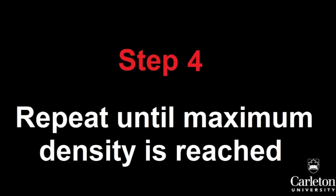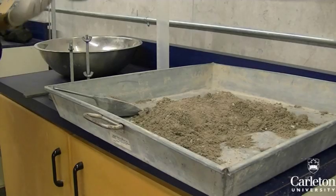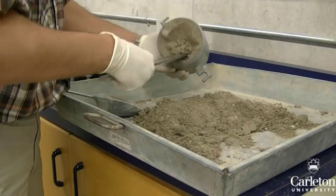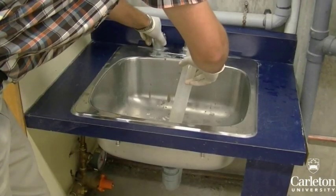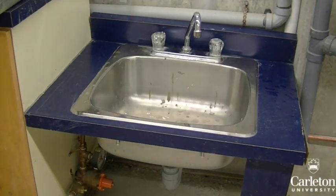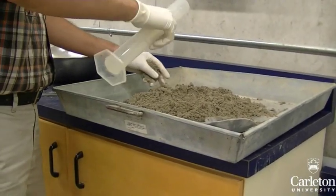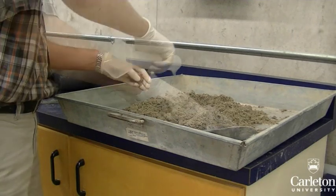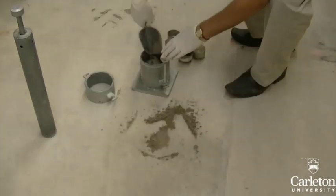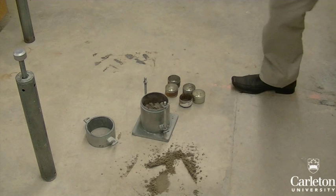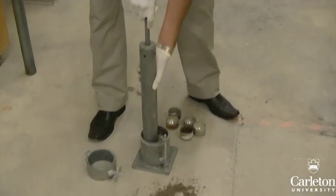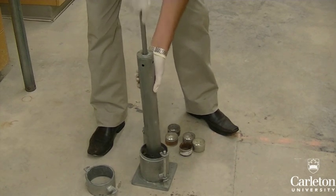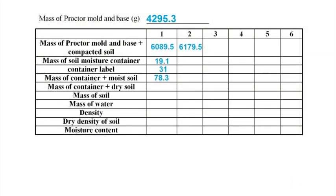You will need to repeat the compaction test at greater moisture contents until you find the maximum density. First, empty the mold from the previous test and reset the mold. Mix the soil a bit. For the next test, increase the moisture content of the sample by roughly 2–3%. For a sample mass of 6 pounds, this means adding about 70 milliliters of water — this does not need to be exact. Mix the soil again so that it is uniform, then perform the test again. Measure the mass of the mold and compacted soil and record it in the table. Since we've added water, the grains are more consolidated and the mass of the mold and sample will be higher than before.